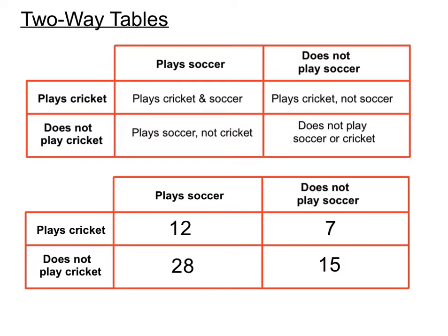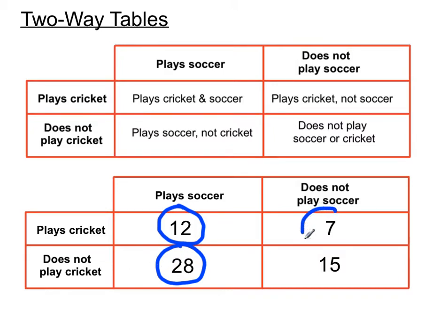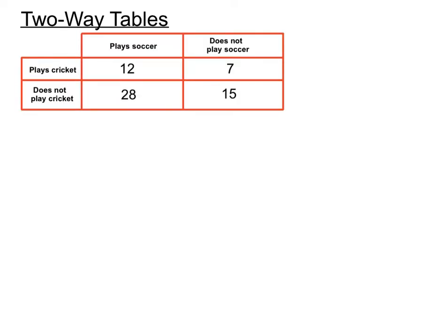Looking closely at these items: twelve people here play both soccer and cricket. Twenty-eight people play soccer but do not play cricket. Seven people do not play soccer but do play cricket. And fifteen people do not play soccer and do not play cricket. So just carefully line up those numbers and we can tell the story of the different categories.